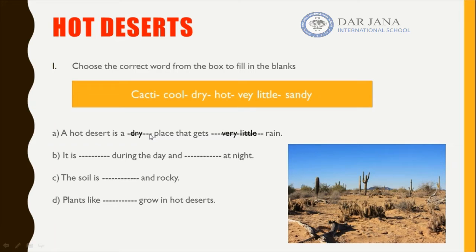The second sentence: it is what during the day and what at night? The weather is hot during daytime and cool during nighttime — the temperatures drop.